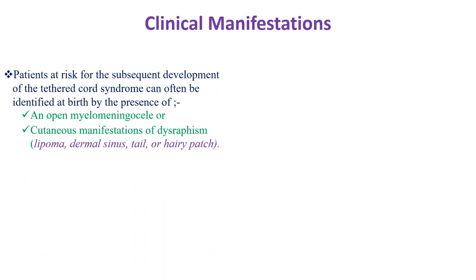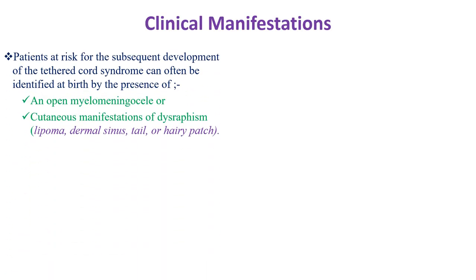Regarding clinical manifestations of tethered cord, patients at risk for subsequent development of tethered cord syndrome can often be identified at birth by the presence of an open myelomeningocele or cutaneous manifestations of dysraphism, such as lipoma, dermal sinus, tail, or hair patches. So we should examine the back of every newborn.